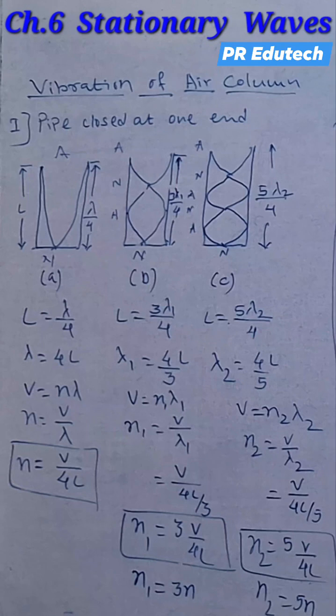In diagram A you will be able to see only half of the loop. Therefore length of the tube is equal to lambda divided by 4. In the second case you will be able to see there is 1 and a half loop.